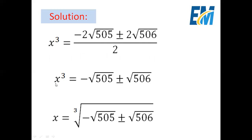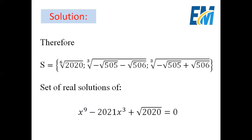Since w equals x cubed, we get x equals the cubic root of (minus radical 505 plus or minus radical 506). Therefore the real solutions of the equation x to the power 9 minus 2021 x cubed plus square root of 2020 equals 0 are: the sixth root of 2020, the cubic root of (minus square root of 505 minus square root of 506), and the cubic root of (minus square root of 505 plus square root of 506).